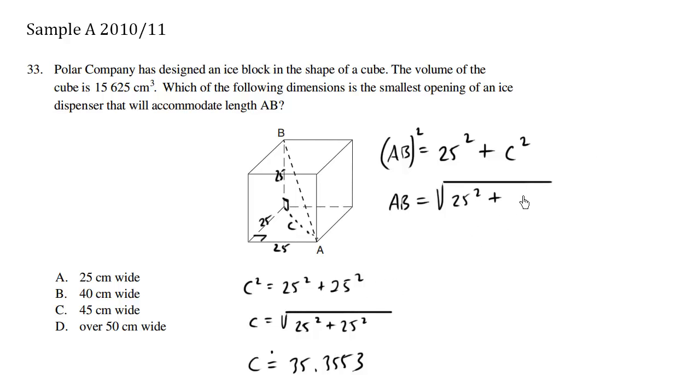The exact result here is C squared is 25 squared plus 25 squared. That's C squared from before.